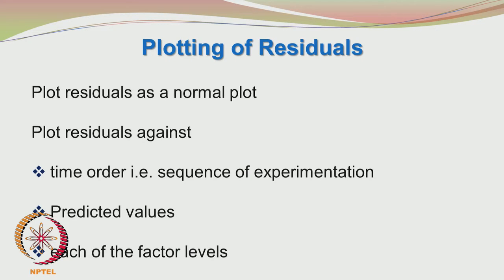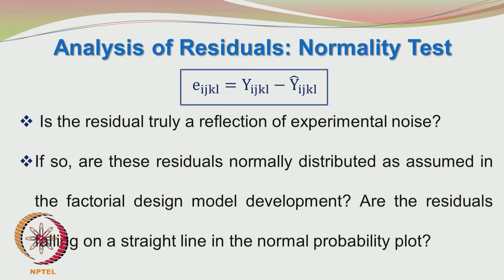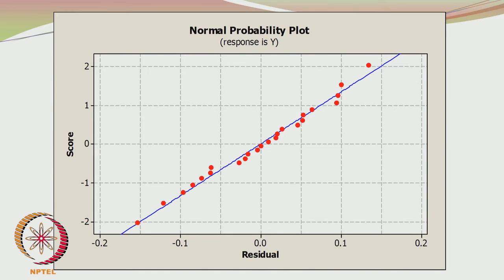The residuals may be plotted in a normal probability plot, in time order (the sequence of experimentation), against predicted values, and against each factor level to see the spread at each level. If the residuals are normally distributed, they will fall on a straight line in the normal probability plot. For this 3-factor factorial design involving the yield of the medicinal compound, the residuals are behaving reasonably well, falling on a straight line more or less, with no gross deviation.